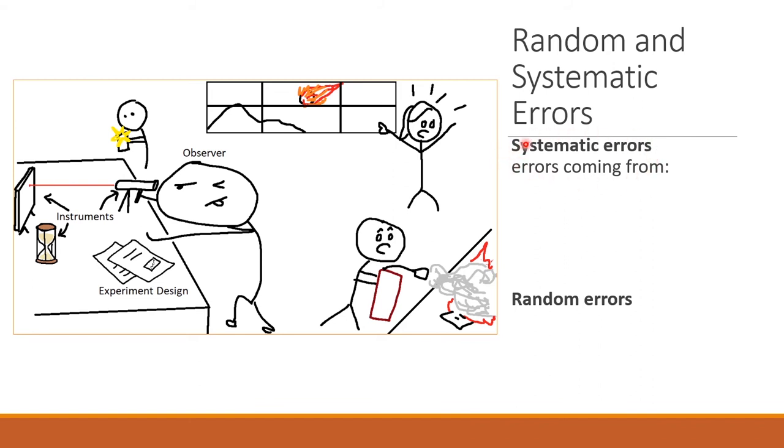Systematic errors first. These are errors coming from: number one, the observer. For example, if the observer wears glasses like me, maybe there's an error there because he can't see the data accurately. Number two, the instruments. Maybe the instruments are not calibrated properly.